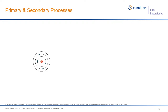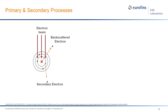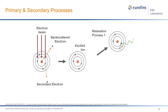When we put a sample into an SEM, an electron beam comes in and interacts with the material. At the surface it can produce a backscattered electron. The beam can also kick off an inner core electron — that's our secondary electron. Once that inner electron is ejected, we have an excited ion, and a relaxation process occurs: an outer core electron drops in and gives off a characteristic fluorescent x-ray. This characteristic x-ray has a very defined energy characteristic of the element it came from, and we use this in our EDX analysis.